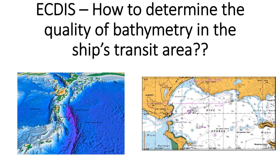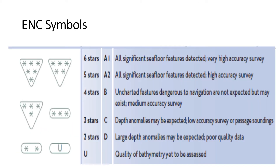Similarly, we have bathymetry, which reflects the quality of the study of sea depths done in the area where your ship is transiting. Before we go into the ECDIS, you have to understand these chart symbols — these are the symbols for electronic navigation charts. Each symbol signifies the quality of bathymetry.